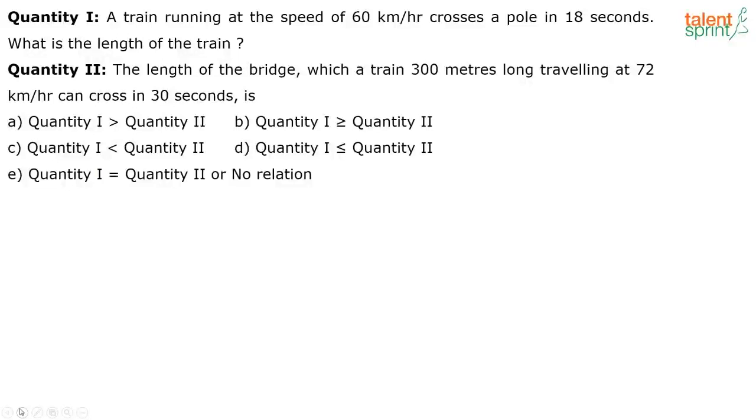So this is on time and distance. A train running at a speed of 60 kilometers per hour crosses a pole in 18 seconds. What is the length of the train? You have two quantities, quantity one and quantity two. What is the first quantity?